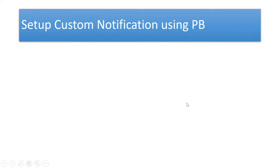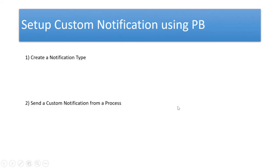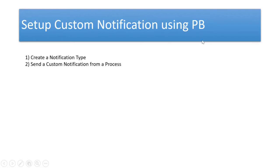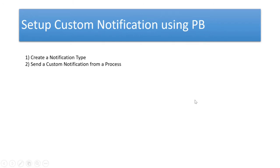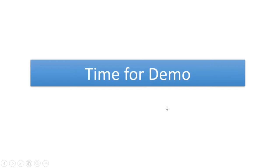We have understood the need for custom notifications — alerting the user without leaving Salesforce. To set this up using Process Builder, there are two steps. Step one is creating a notification type — we'll see what exactly the notification type is about and what it has to do with this setup. Step two is to send the custom notification from a process. We can also send custom notifications from Apex and from Flow — stay tuned for those episodes. For now, let's focus on the two-step Process Builder approach.